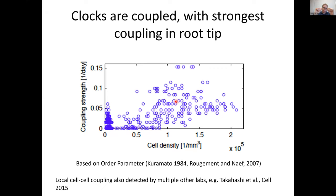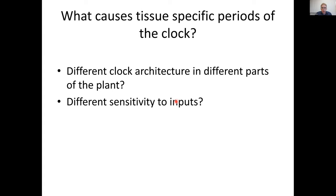One cell is telling the cell next door what time of day it thinks it is, and they're averaging the response. Going back to what we want to put into the model, we can put this local coupling in and see if it's enough to generate spatial waves. But local cell-to-cell coupling on its own isn't enough to generate the period differences we measure across the plant. We need some reason why the clock runs at different speeds in the shoot versus the root and root tip. Two possible explanations are: different clock architectures in different parts of the plant, or different sensitivity to inputs.